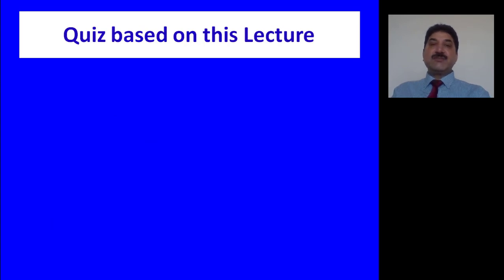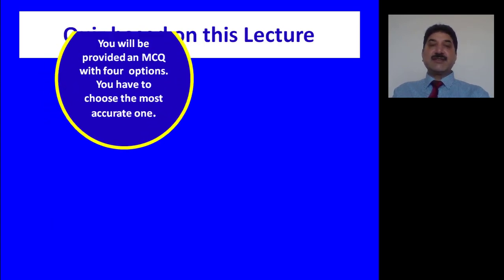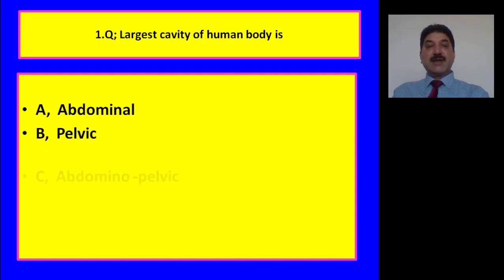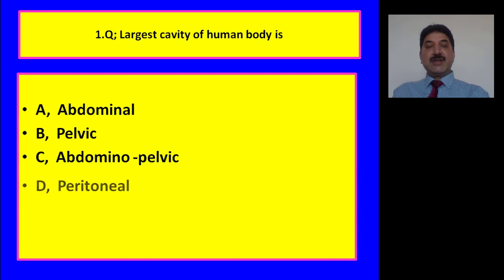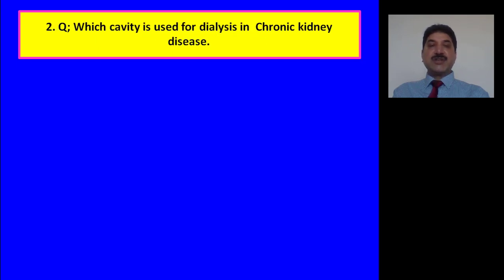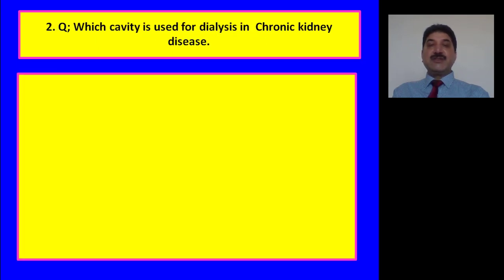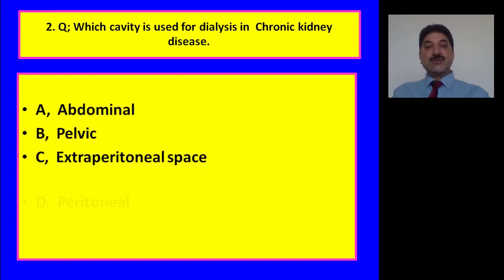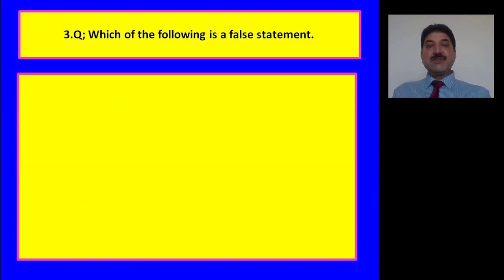Now let us go for echo questions based on this lecture. Question 1: The largest cavity of the human body is — abdominal cavity, pelvic cavity, abdominal pelvic cavity, or peritoneal cavity? C, abdominal pelvic cavity, is the correct option. Question 2: Which cavity is used for dialysis in chronic renal disease? — abdominal cavity, pelvic cavity, extra-peritoneal surface, or peritoneal cavity? D, peritoneal cavity, is the correct option.